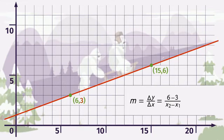6 minus 3 is equal to 3, and 15 minus 6 is equal to 9. You can simplify this fraction, so the slope is 1 over 3, or one-third.